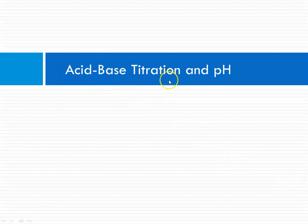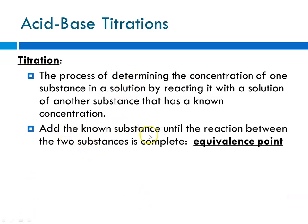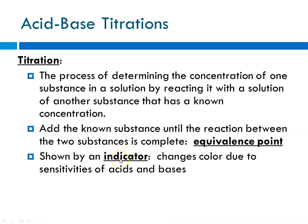We should talk about acid-base titration and how it relates to pH. A titration is a process of determining the concentration of one substance by reacting it with a known solution of another substance that has a known concentration. For instance, if you had an unknown concentration of hydrochloric acid, you could use a known 1 molar solution of sodium hydroxide to calculate the concentration of the HCl. You slowly add the known substance until you reach the equivalence point — the point where the amount of acid equals the amount of base — using an appropriate indicator that changes color at the equivalence point.